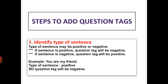There are certain steps to add question tags. Let us see them one by one. Step number one: identify the type of sentence. The type of sentence may be positive or negative. If the sentence is positive, the question tag will be negative. If the sentence is negative, the question tag will be positive.